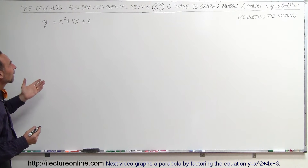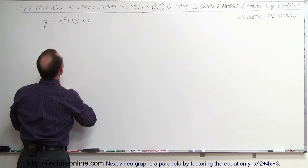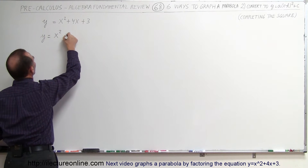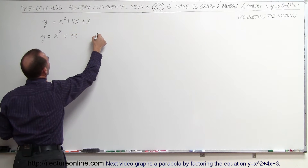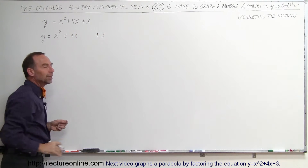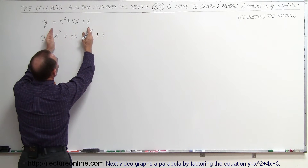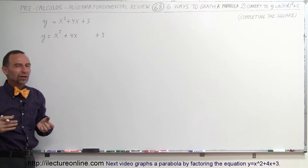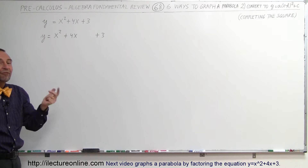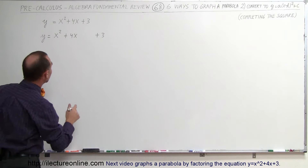Let's see what that means. We're going to take the plus 3 and move it to the right to make some space. So we have y equals x squared plus 4x, and we write plus 3 here, because what we want to do is add another term that will complete the square — that will make this into something we can write as a binomial squared. That's what we mean by completing the square.